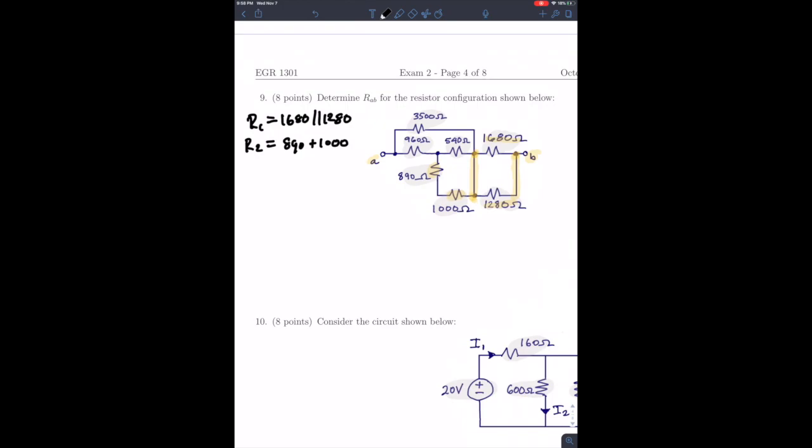And from there, R2, which is this series combination, these two guys in series, is in parallel with 540. So we could write that down, R3 is the 1890, which is R2, in parallel with 540. So you compute that.